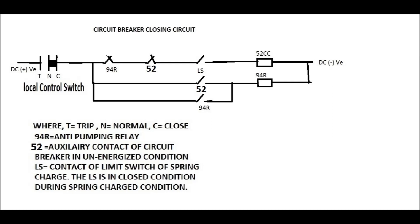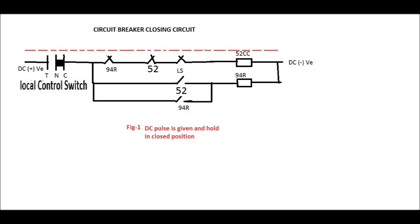To understand the function of the anti-pumping relay, let us look at the simple circuit diagram. In this diagram, 52CC is the closing coil of the circuit breaker; 52 represents the circuit breaker; 94R is the anti-pumping relay coil; and TNC is the local control switch — that is, Trip-Neutral-Close. All contacts are shown in breaker-off conditions. LS is the limit switch contact of the spring charge; whenever the spring is charged, LS remains closed. There are two auxiliary contacts of the circuit breaker: one NC in series with 52C, and one NO in series with 94R. There are two auxiliary contacts of 94R: one NC in series with 52CC, and one 94R in parallel with 52.